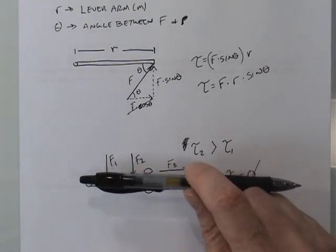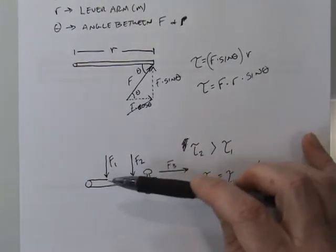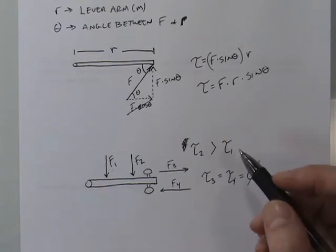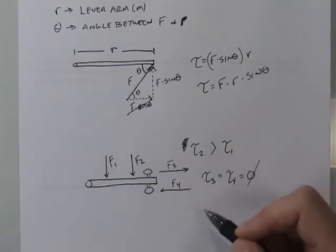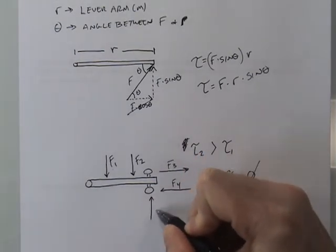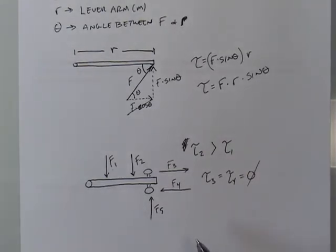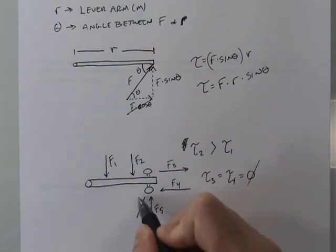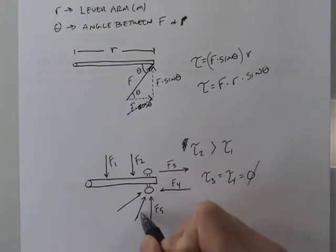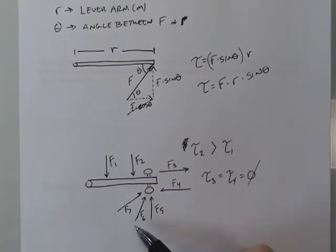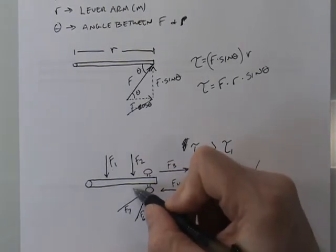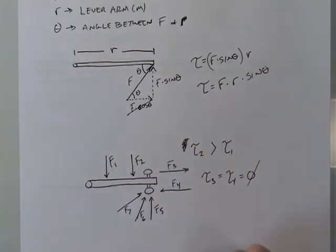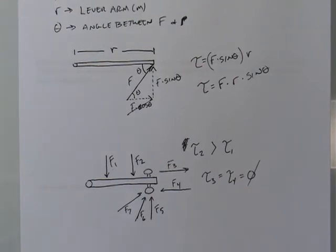Pushing along the lever arm gives zero torque because the sine of 0° is zero, and pushing in the opposite direction gives sine of 180°, which is also zero. On the other hand, if we apply the same force perpendicular to the door we get more torque than any other situation. Forces at other angles still produce torque but reduced by the sine of the angle. The three ways to increase torque are: increase the force, increase the lever arm, or make the angle as close to 90 degrees as possible.